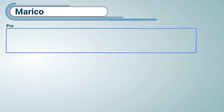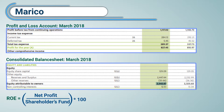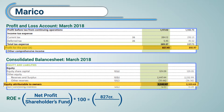Let's see the consolidated net profit of Marico. We have taken the profit and loss and balance sheet figures from the consolidated balance sheet of March 2018. The net profit of Marico is Rs. 827 crores and the total equity is Rs. 2,542 crores. Therefore, according to the formula, the return on equity is net profit divided by equity multiplied by 100, which gives us a value of 34.12% ROE.